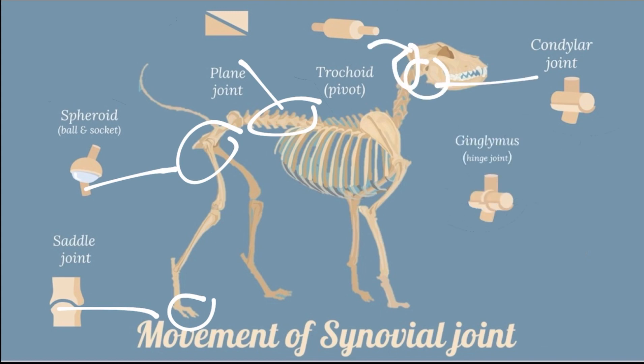Next is the ginglymous joint. These joints move only in the sagittal plane. The movements in this type of joint are flexion, extension, and in some joints, hyperextension. An example of this joint is the elbow joint.